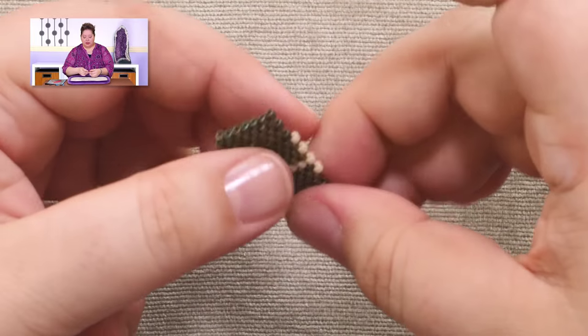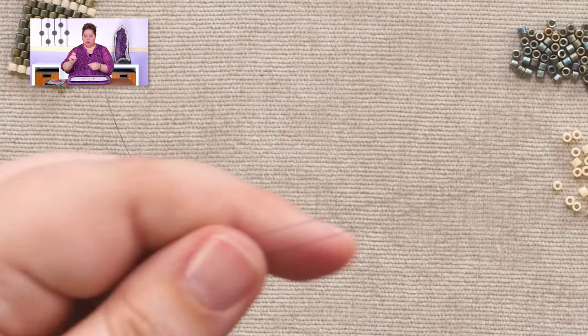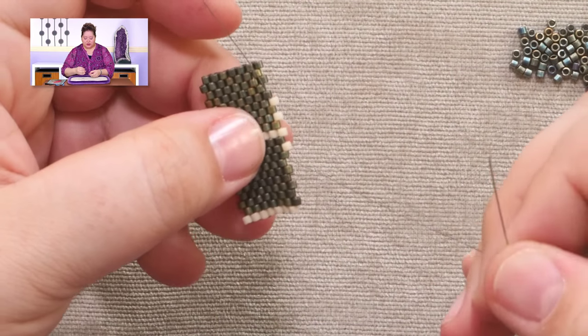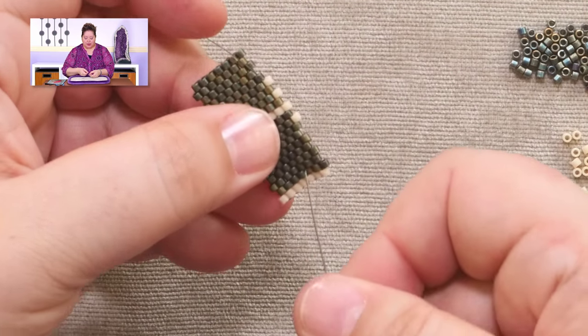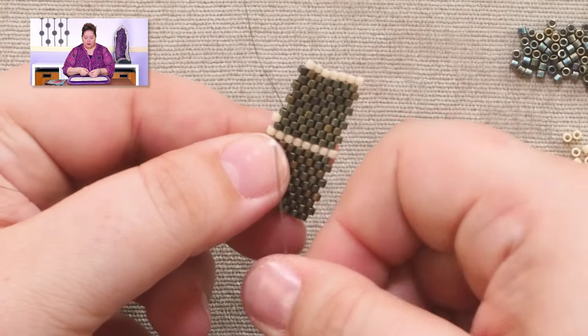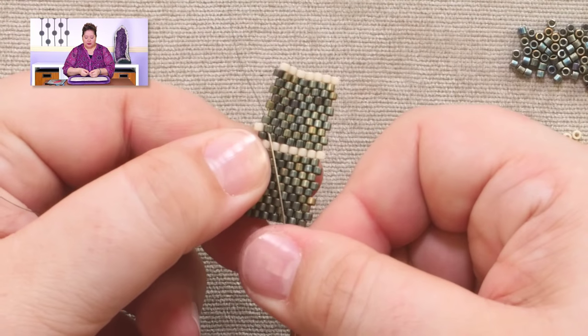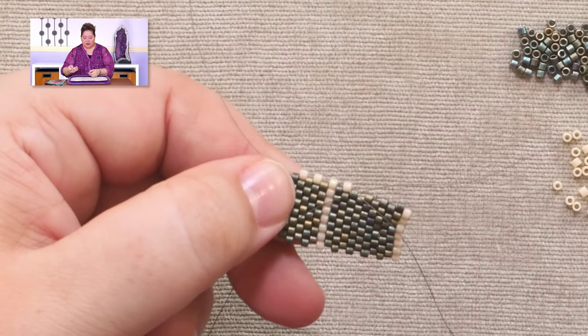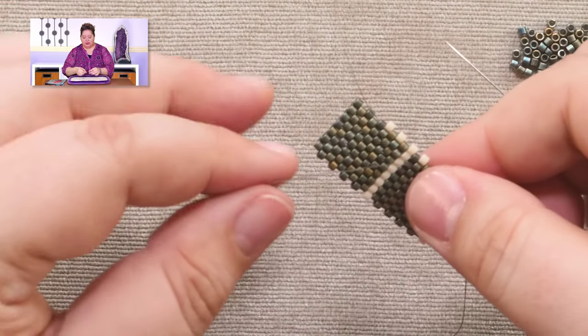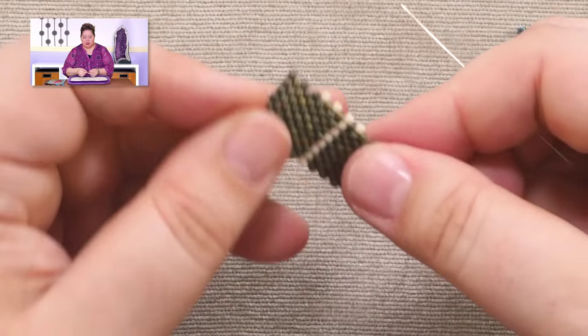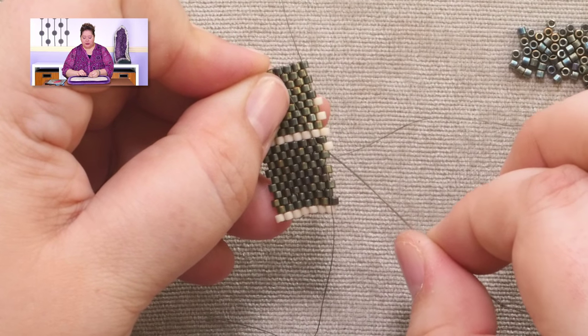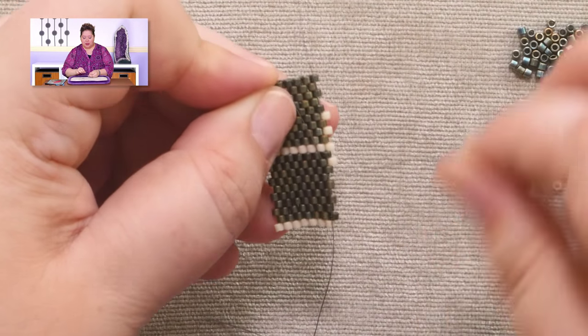So now, what I'm going to do is when I start my next row, I'm going to start a new thread. And all I'm going to do to start that new thread is I'm going to pass through two beads on the diagonal here. Because what I want to do is, this is one thing that is important. If you want to keep your piece even count, you want to make sure that you are starting where you're adding your bead as an up bead.